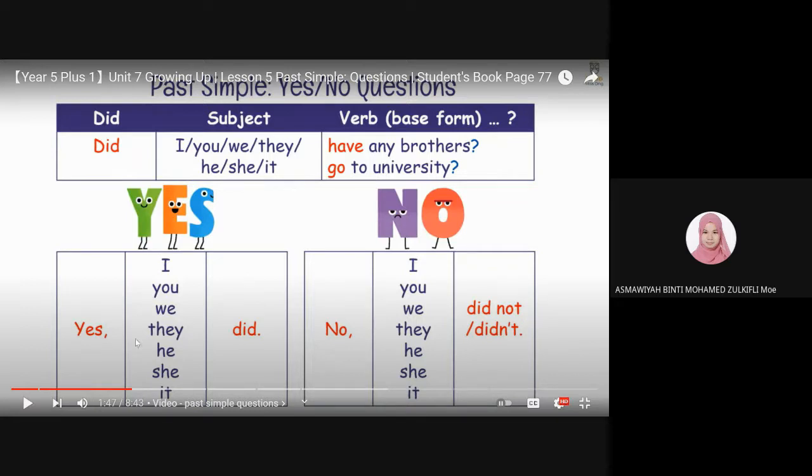Kalau yes, yes. Kalau did you have any brothers? Yes, I did. Okay, kalau tak ada abang, no, I did not. Or I didn't. Okay, understand? Ni untuk soalan yang kita perlukan jawapan yes or no.